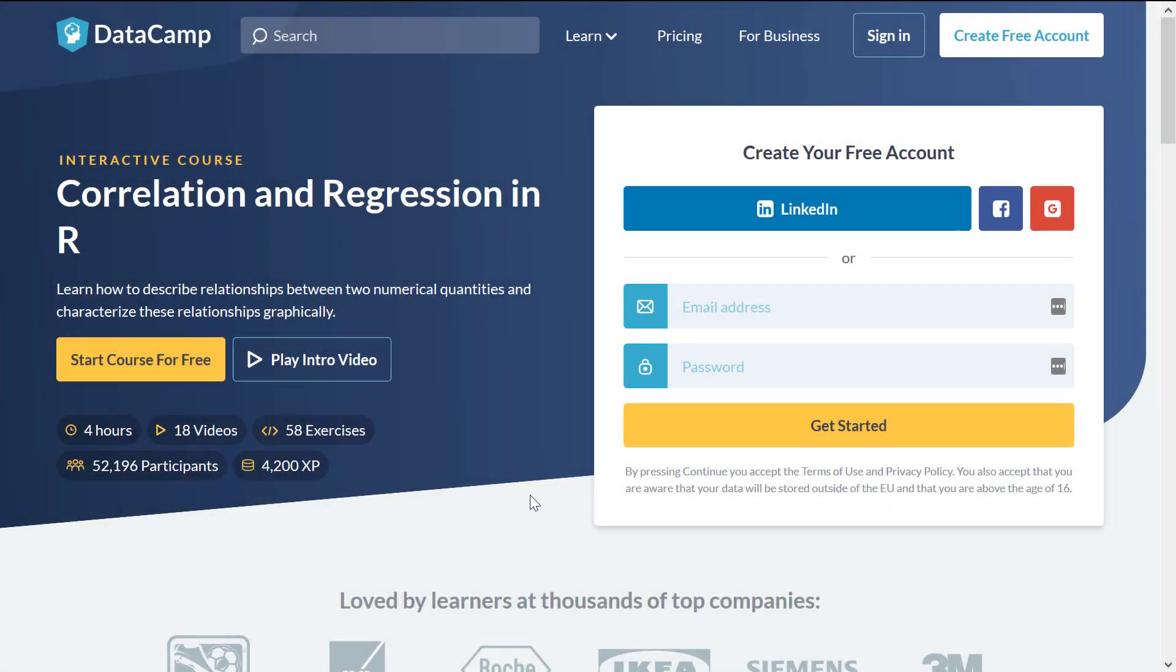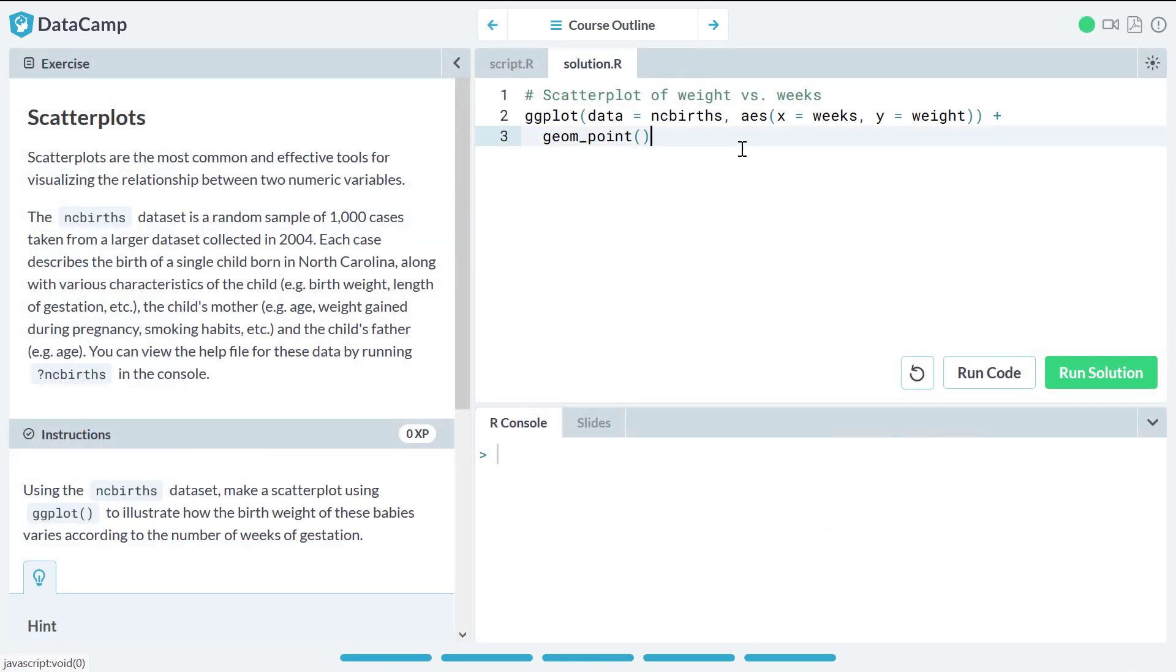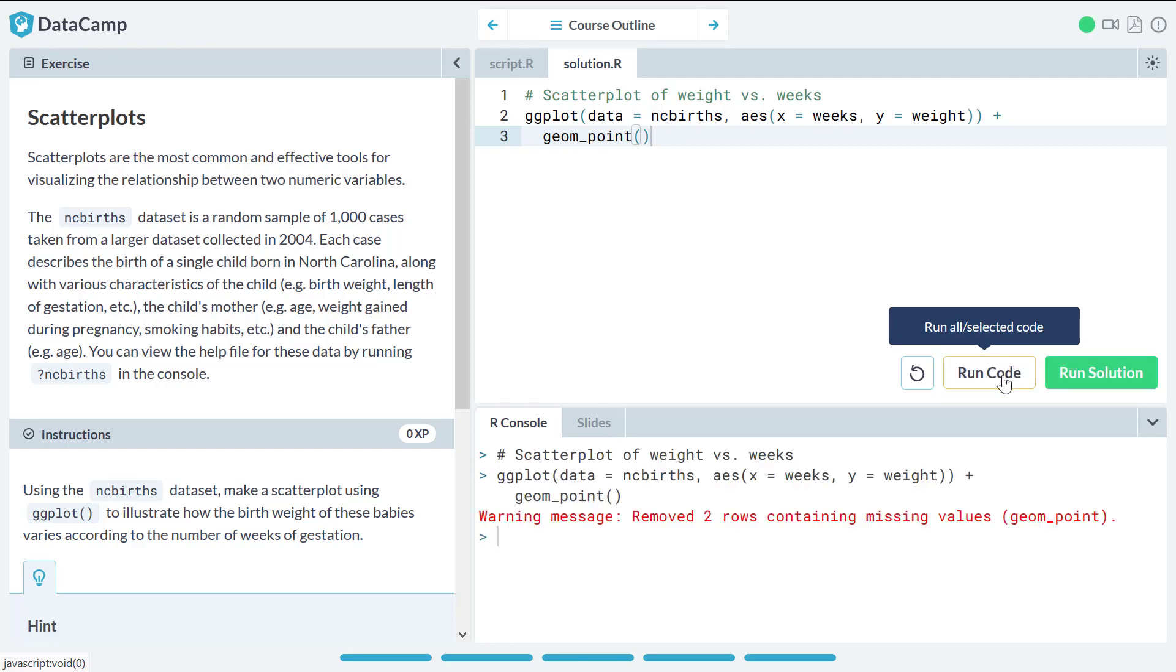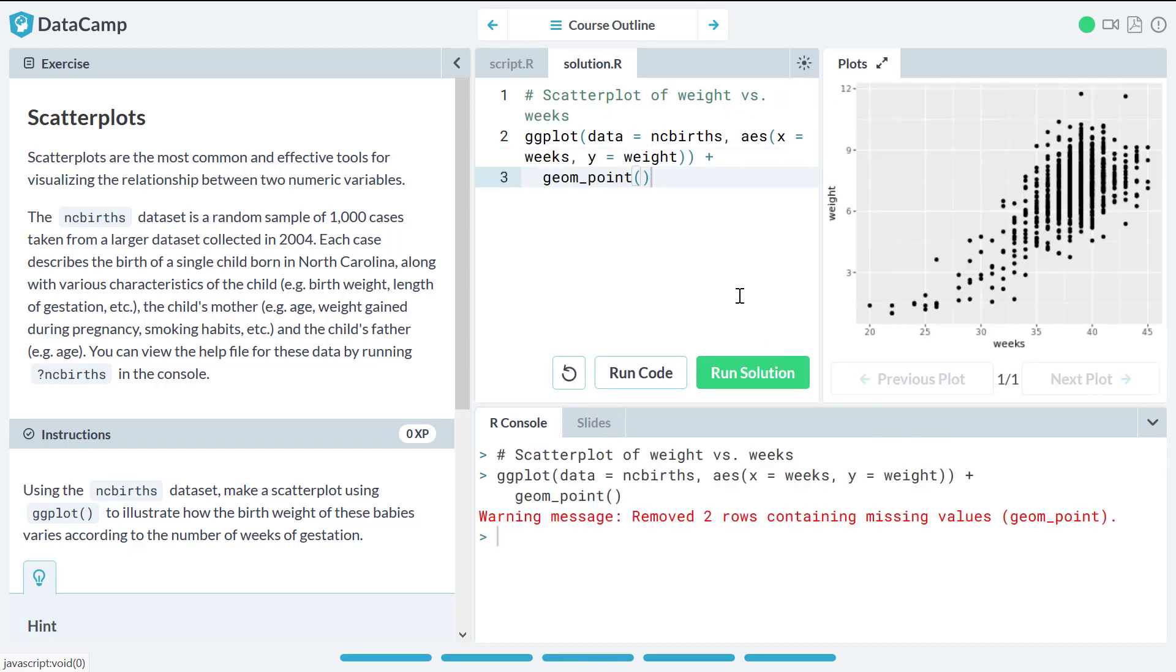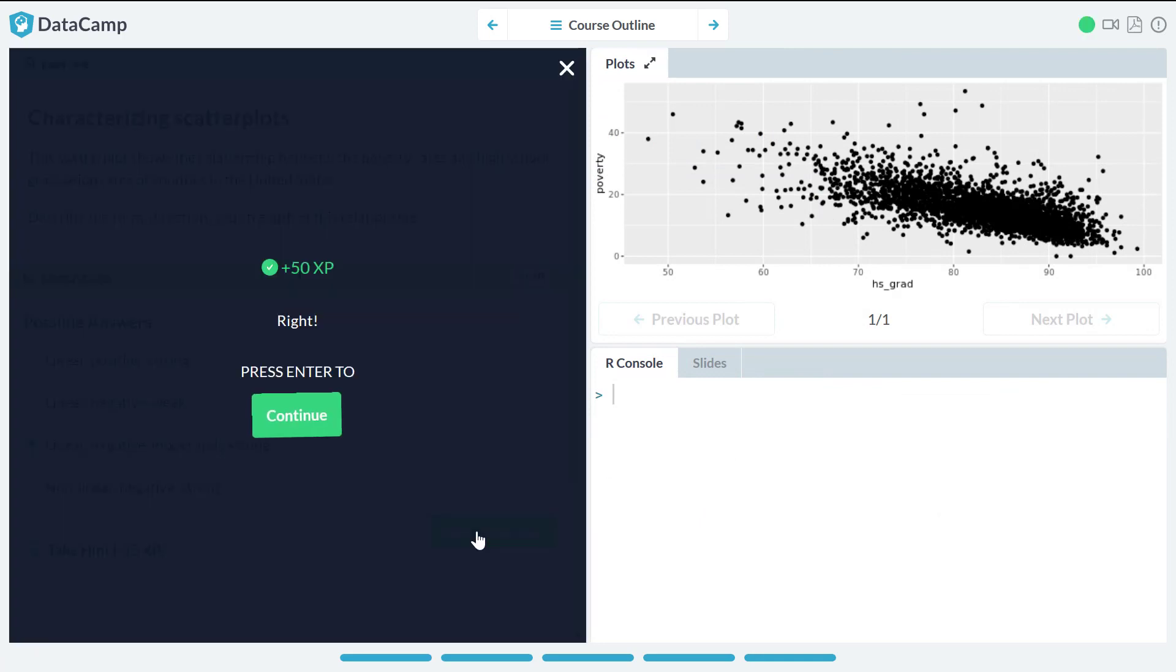Before starting this tutorial, I just wanted to draw your attention to the Correlation and Regression online course by Datacamp. Datacamp offers interactive R courses that you can do directly within your web browser, and you can start the course for free. If you're interested in performing correlations in R, then I recommend checking out the course. You can find a link in the description below.